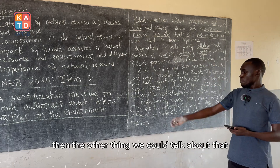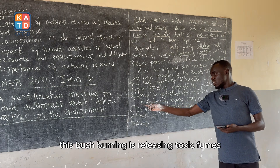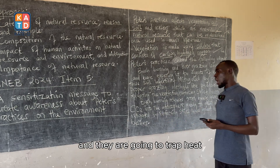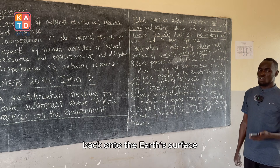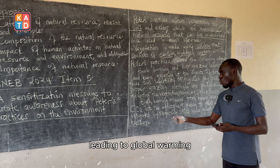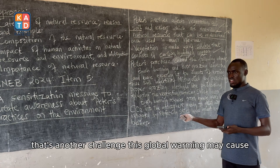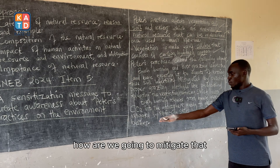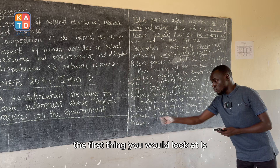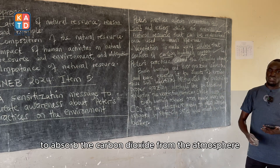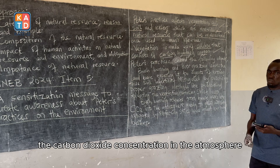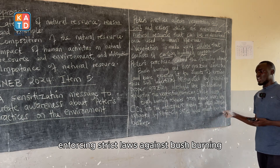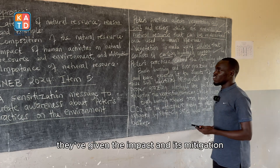Bush burning releases toxic fumes — these greenhouse gases go to the atmosphere, trap heat energy that is reverted back onto the earth's surface, leading to global warming. This global warming may cause changes in climate patterns. To mitigate that, the first thing is re-planting vegetation to absorb carbon dioxide from the atmosphere, reducing or balancing the carbon dioxide concentration in the atmosphere. Or, stop the act of bush burning by enforcing strict laws against bush burning.